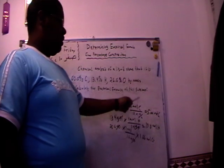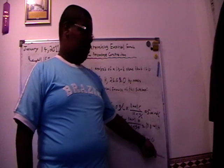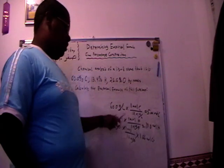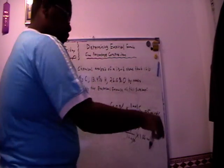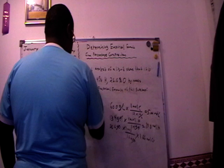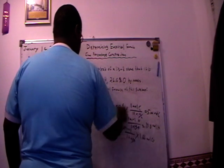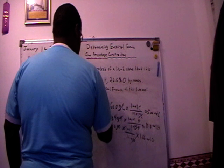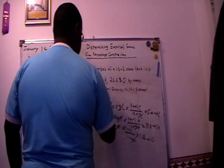Please look at this: those numbers are not in whole numbers. The only number that's in a whole number is carbon, which is 5.00. Currently the empirical formula is carbon 5, hydrogen 13.3, and oxygen 1.66.